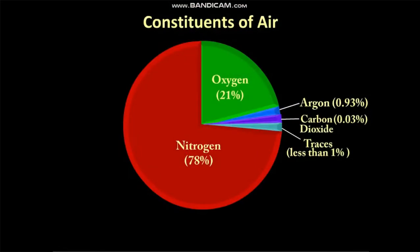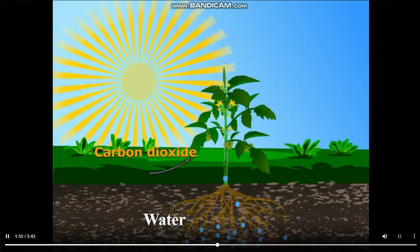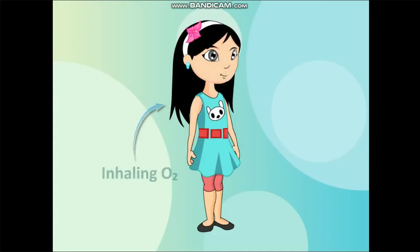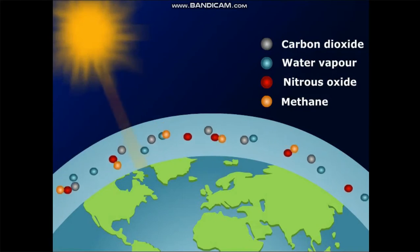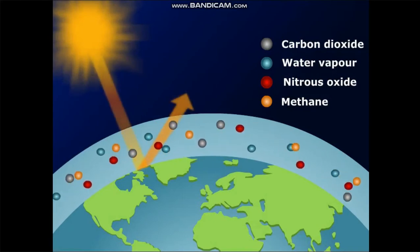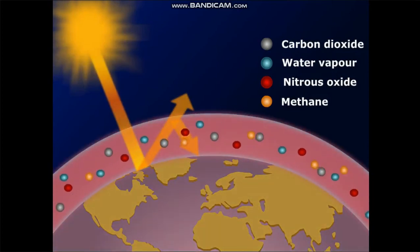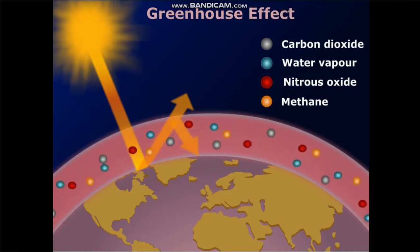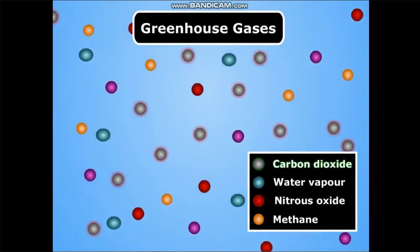Carbon dioxide forms about 0.03% of the volume of air. It is used by green plants to make their food, and it is exhaled by living beings. Carbon dioxide has the unique property of absorbing infrared radiations coming from the sun, resulting in the heating of the Earth's surface. This is called the greenhouse effect, and so carbon dioxide is known as a greenhouse gas.